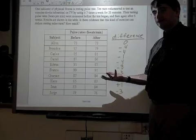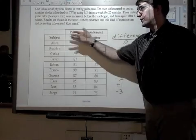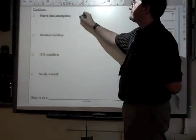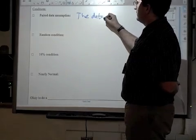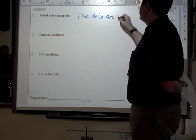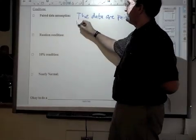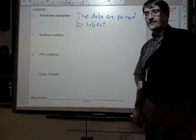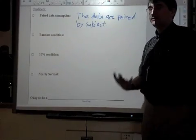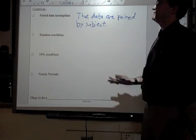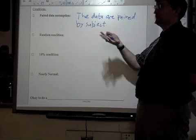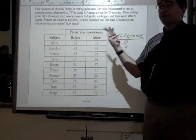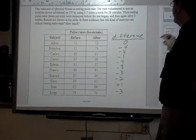The reason here, the reason why we're pairing these numbers, is because each of them are from a different person. And so that's what we can say, is that the data are paired by subject. And that's pretty much all you need to say about the paired data assumption. You have to have a good reason to be pairing the data. So if the data are paired by subject, each of these resting pulse rates are from the same person. They're before and after for the same person. So that's why. That's why we're pairing them. That's why we're looking at the differences.